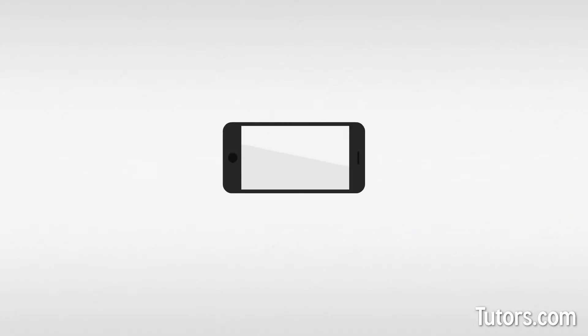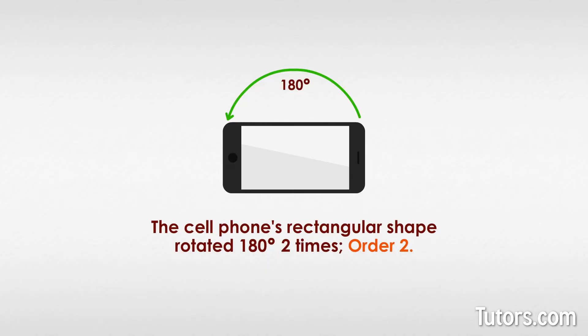Take a rectangular cell phone, for example. Concentrating only on its outline, what happens when you rotate or spin the phone halfway around a complete circle? You can do that same move again to return to the original shape, so the cell phone's rectangular shape rotated 180 degrees two times, order 2.